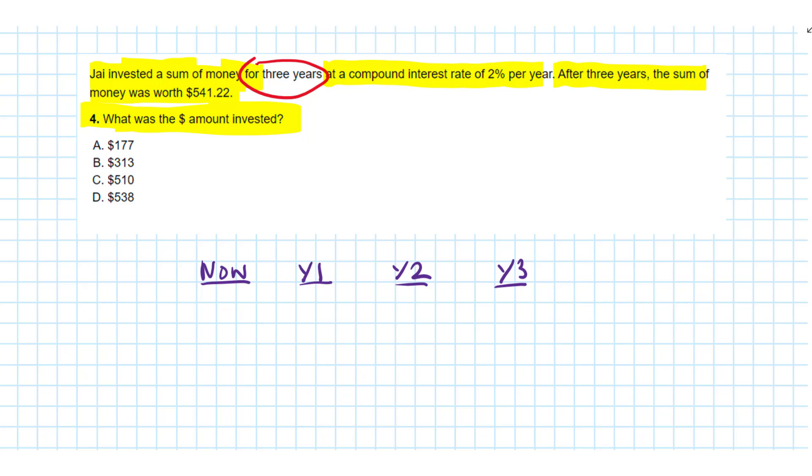Welcome back. So it's important to understand they want the amount invested - that would be the amount now, today. At the end of the third year, the investment was worth $541.22. We're looking back in time. So we've got to work backward and get the original investment.